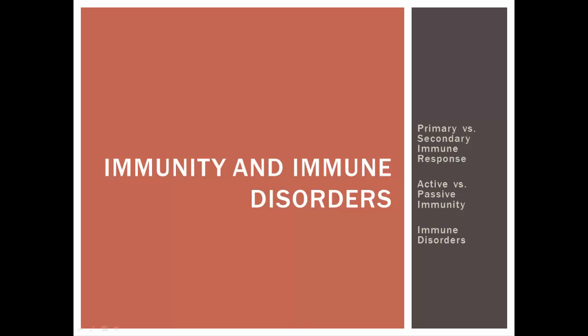In this video lecture, we're going to look at immunity, which basically means that you've got the built-in defenses so that you can avoid getting infection. We'll also look at immune disorders, when your immune system isn't working properly. We'll look first at primary versus secondary immune response, then the different types of immunity such as active and passive, and then immune disorders like autoimmune diseases and AIDS.